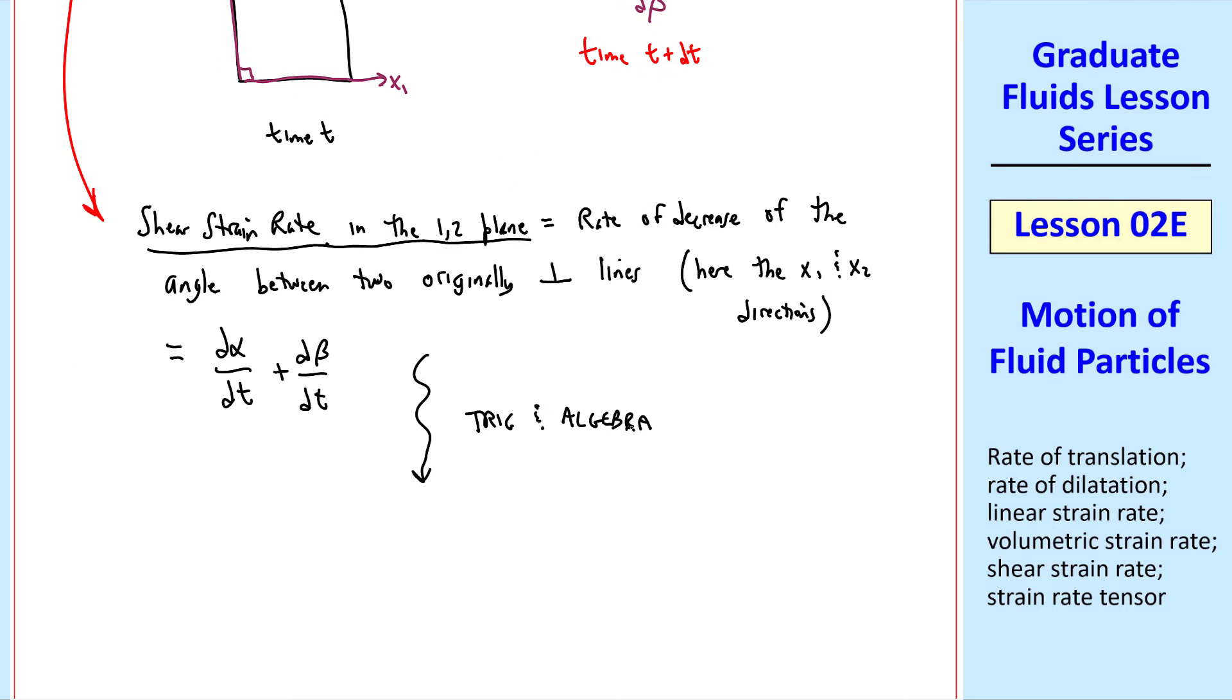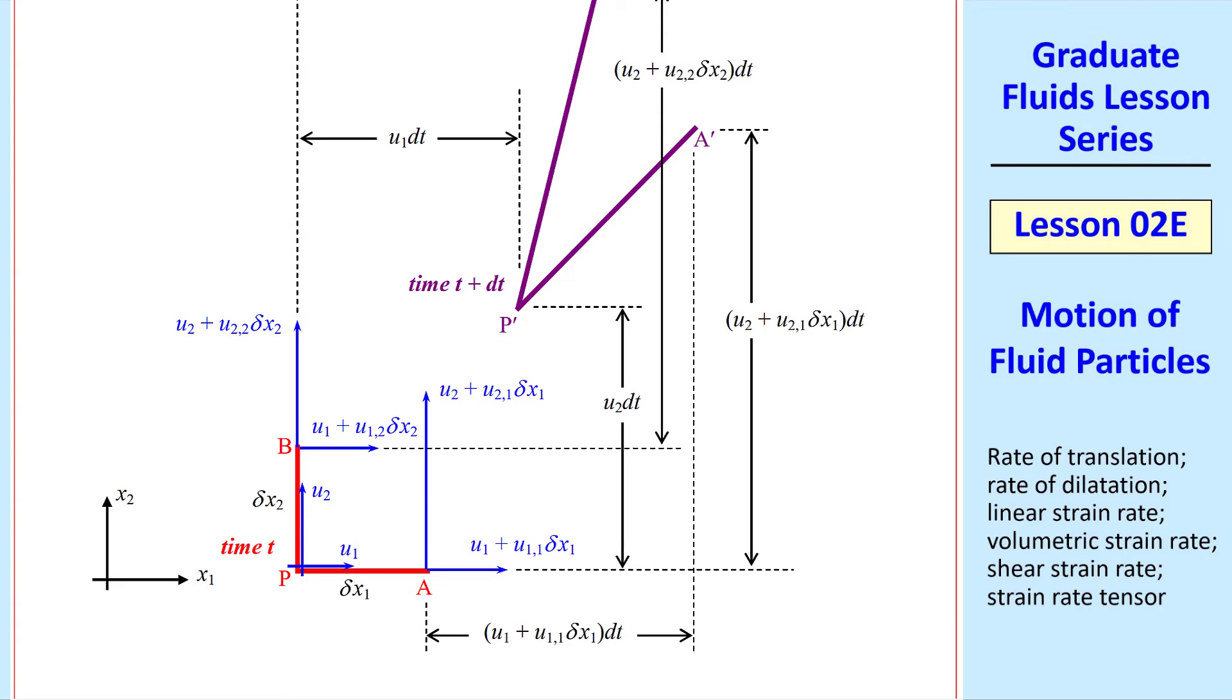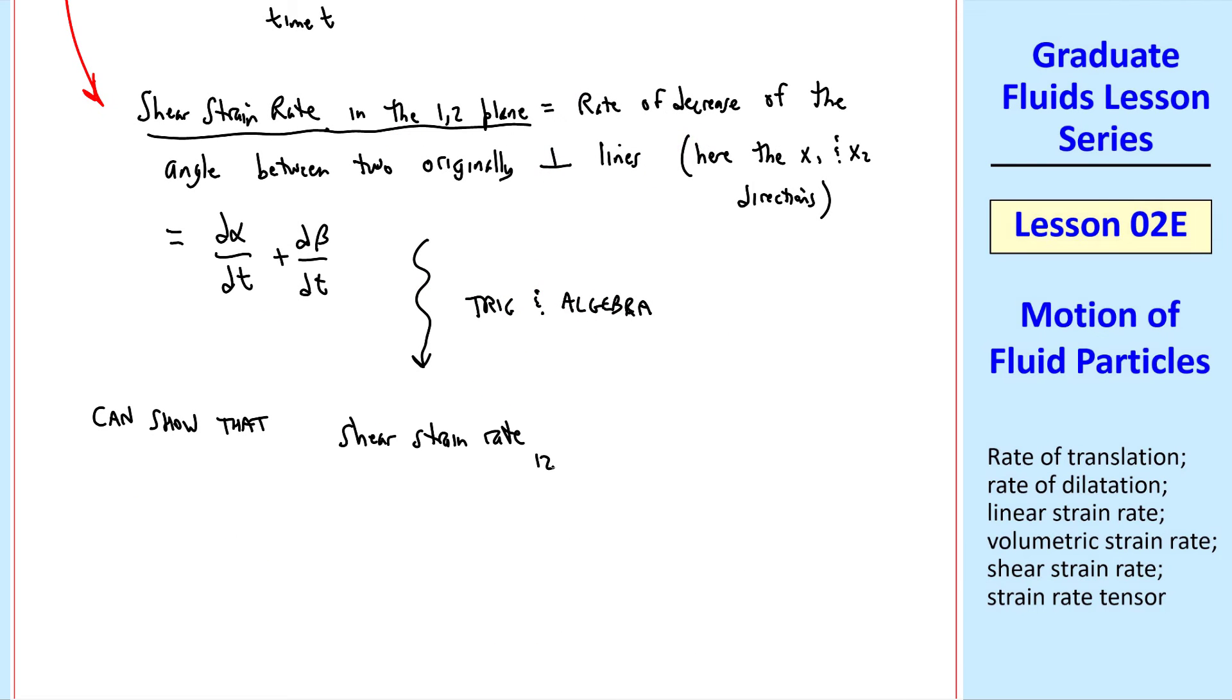After some trig and algebra, which I'm not going to show - by the way, a squiggly arrow always means that I'm doing some algebra - and using this diagram to help us with these angles, here's where the trig comes in with these lengths and angles.